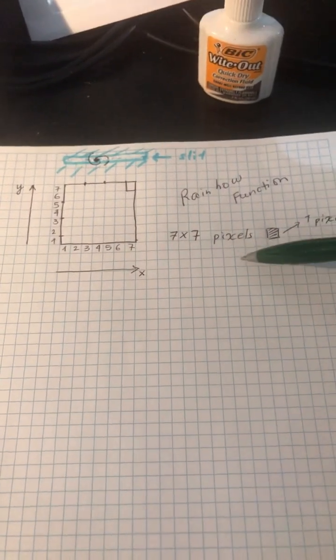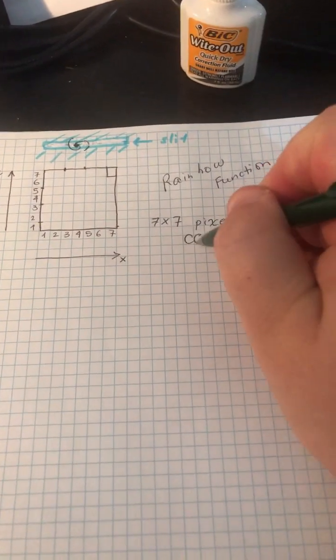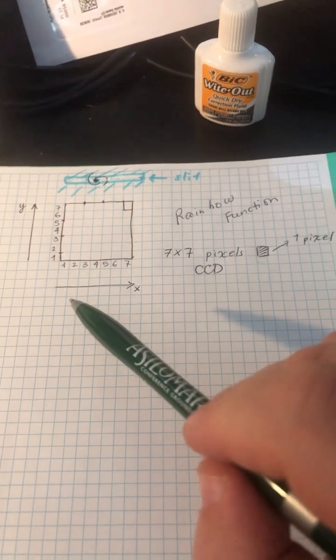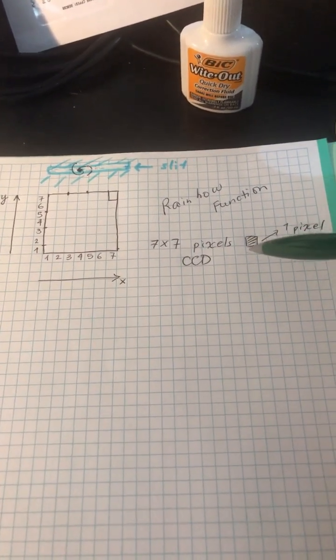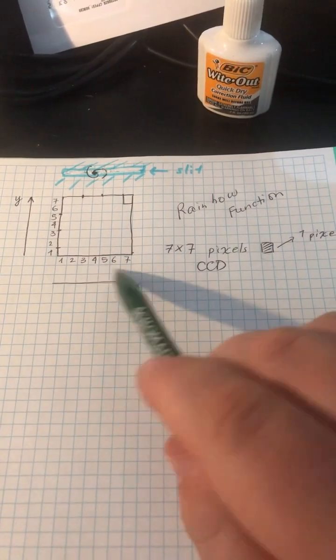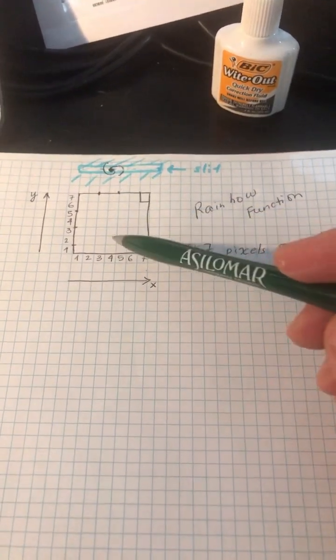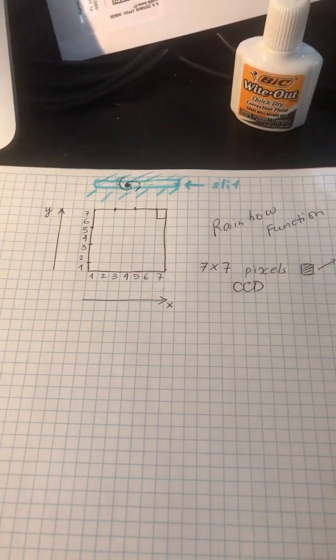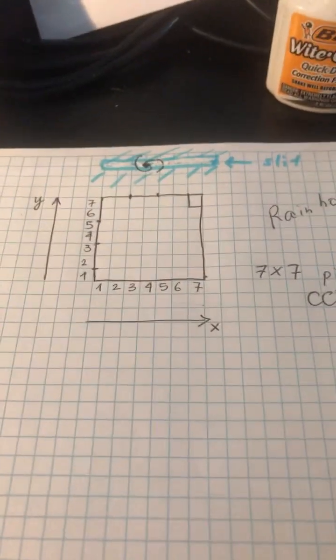Okay, so let's say you have a 7x7 pixel CCD. That's all your CCD knows - each square represents one pixel. There are seven in the X direction and seven in the Y direction. The CCD doesn't know anything about wavelengths.